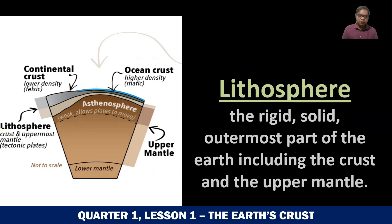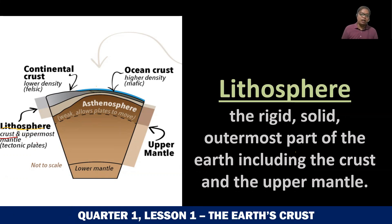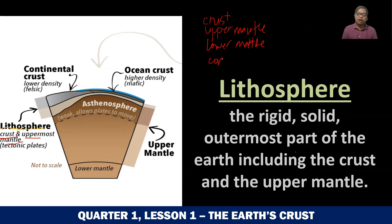So the lithosphere is made up of two parts. As you can see here, the lithosphere is made up of the crust — both oceanic and continental, depending on where you are — and the uppermost mantle. The layers of the Earth are: crust, upper mantle, lower mantle, and then the two cores: the outer and the inner core. The lithosphere covers the crust and the uppermost part of the upper mantle.